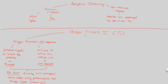Helper T cells are involved in both cell-mediated and humoral adaptive immunity — that's why they're the middleman between both. But how do they produce these signals? How do they know what to do in terms of activating humoral and cell-mediated responses? Well, they themselves need to be activated first — they don't do this haphazardly.